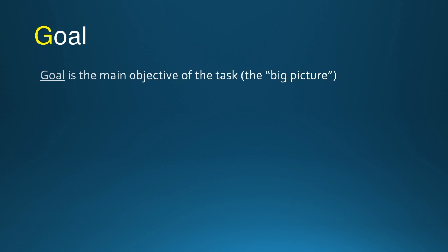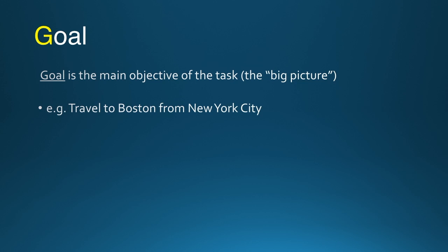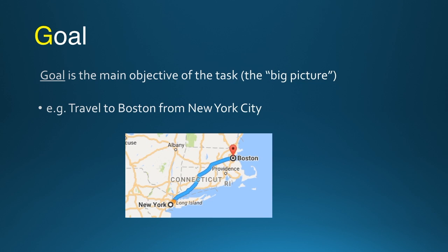Let's start with an example. The G in GOMS stands for Goal — it is the main objective of the task, the big picture. For example, traveling to Boston from New York City is the overarching goal.